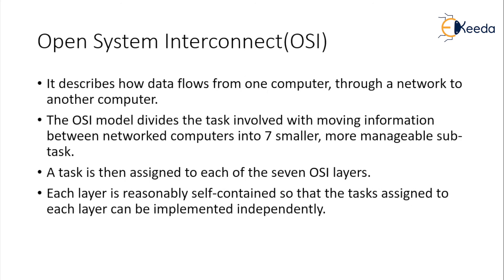Each layer is self-contained so that the tasks assigned to each layer can be implemented independently. This model is designed so that each of the seven layers implements its functionalities independently, ensuring that whatever task is assigned to each layer is properly fulfilled in transferring data from one layer to another, from one machine to another. This model is therefore considered a self-contained model which helps overcome all the complexities faced by networks and transfers data from source to destination without any difficulties.